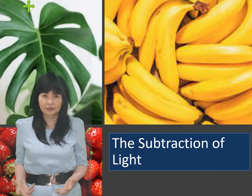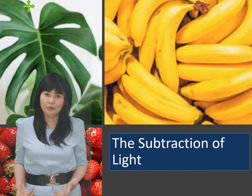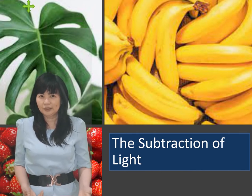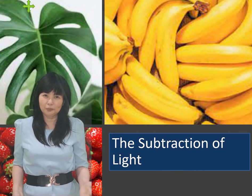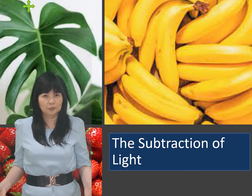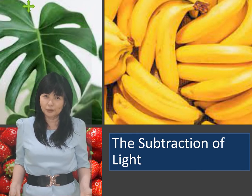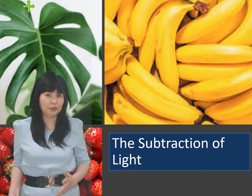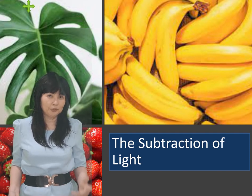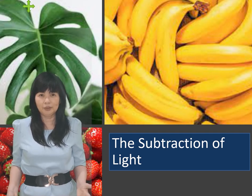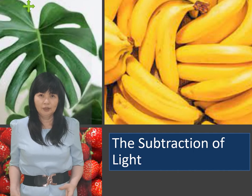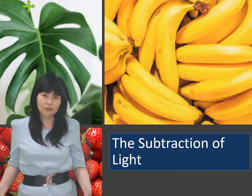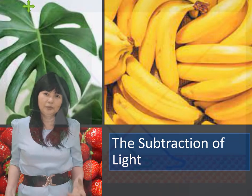How do we see the color of opaque objects? Why do we see a banana as yellow, a strawberry as red, and a leaf as green? To answer this question, let's learn about the subtraction of light.